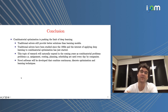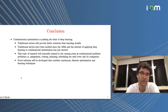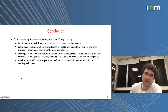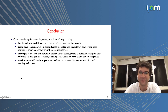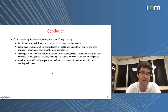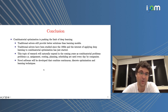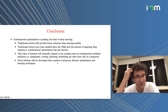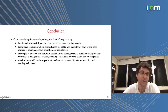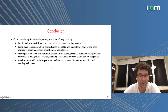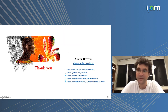In conclusion, combinatorial optimization is very interesting because it pushes the limits of deep learning. Traditional solvers still provide better solutions than learning models, though they have been studied for much longer and deep learning for combinatorial optimization has just started. This research area will naturally develop in the coming years because problems like assignment, route planning, and scheduling are used everywhere by companies. We will likely see novel software combining continuous and discrete optimization with learning techniques.